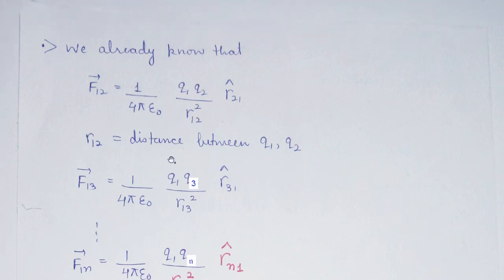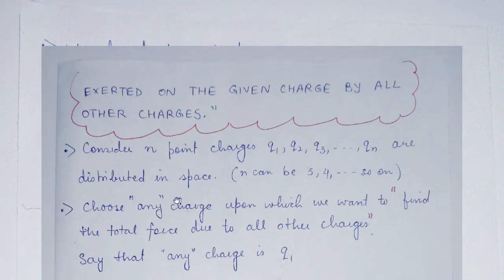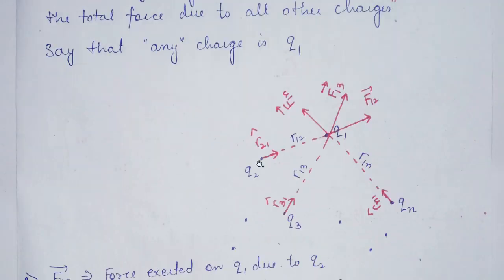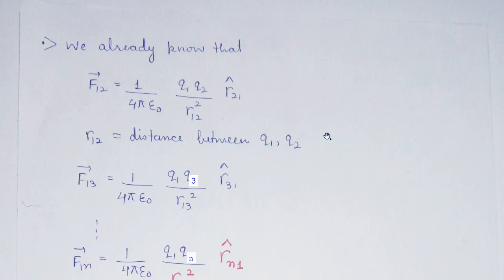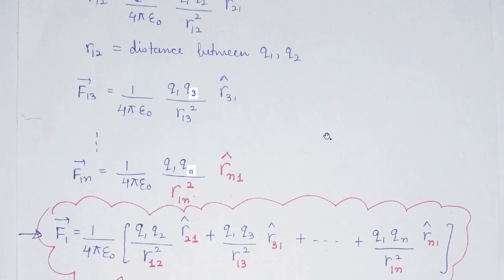Let us see all these distances in the diagram which we have just drawn. This is charge q1, this is q2, and this is the direction of force F12. r12 here represents the distance between these two charges. Similarly, r13 represents the distance between q1 and q3, and so on. We have various forces here.